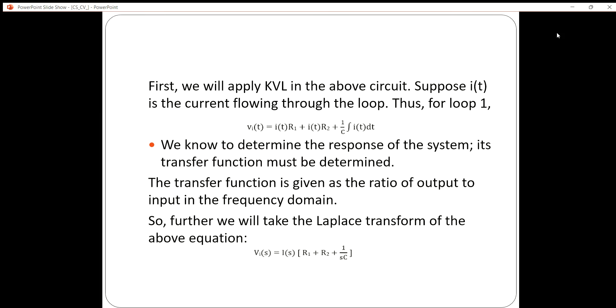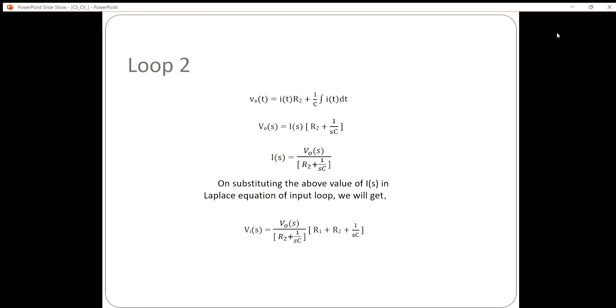So we will take the Laplace transform of the above equation: V(s) = I(s) × [R1 + R2 + 1/(sC)], where R1 and R2 are resistances and C is the capacitance.